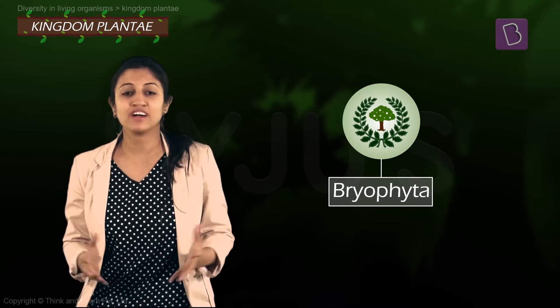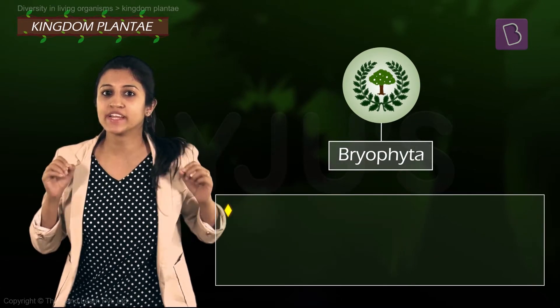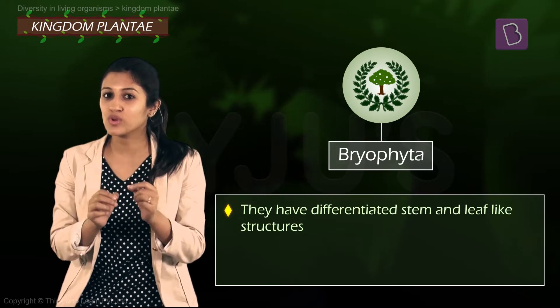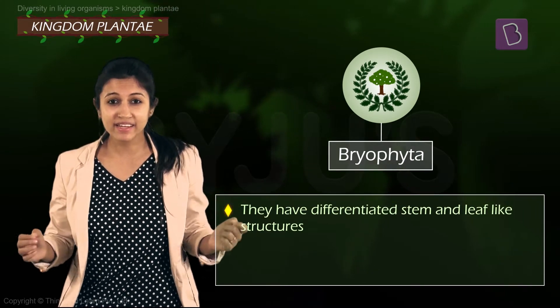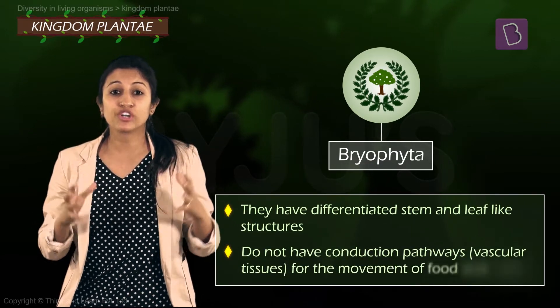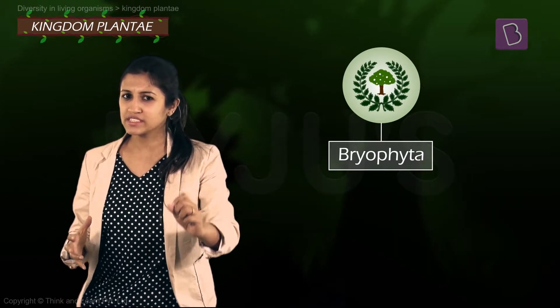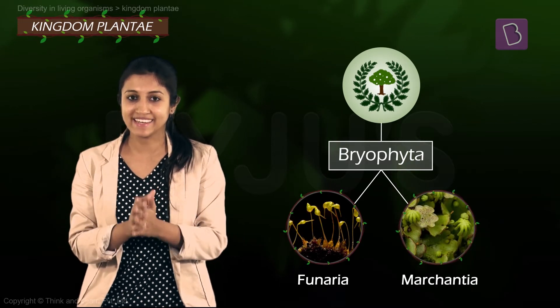A little more advanced subtype of Plantae would be the Bryophytes, the kingdom Bryophyta. This is important because this is the first time you can see differentiated stem and leaf-like structures, making them closer to the plant-like features we know so well. But they aren't there yet because they do not have any special conduction pathways for water and food like the more advanced plants do. So I am sure you have seen these guys — they are the mosses, Funaria and Marchantia in Latin.